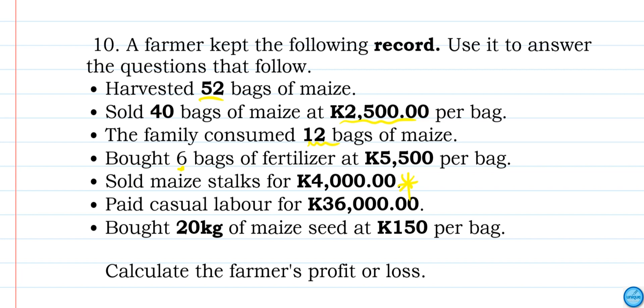He paid casual labor K36,000. He bought 20 kilograms of maize seed at K150 per bag. Now we should calculate the farmer's profit or loss.